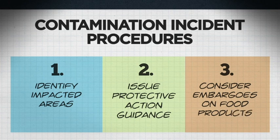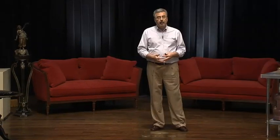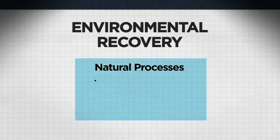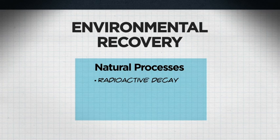The health concerns over contaminated food and water are particularly important if these foods are used continuously in the diet for extended periods of time. After a radiation emergency, public health authorities will provide information about what foods are safe to eat. So how does the environment recover? There are two processes. One is a natural process: radioactive materials decay and go away on their own according to their half-life. Radioactive decay helps reduce the amount of radioactivity in the environment.